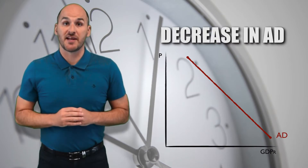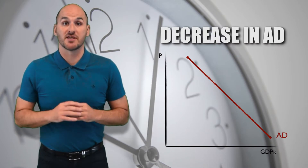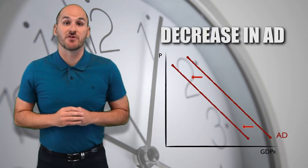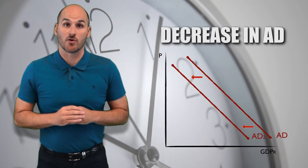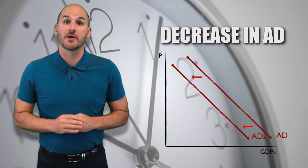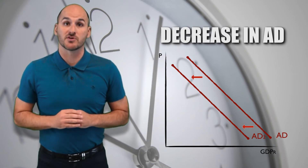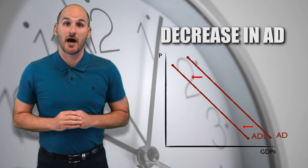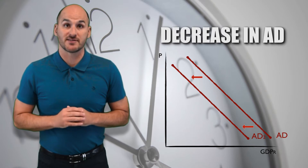A decrease in aggregate demand across the economy, signified by a leftward shift of the aggregate demand curve, means that consumers, firms, government and foreign consumers demand lesser quantities of real GDP output at every price level.